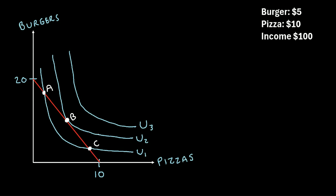Well, at points A, B, and C we're spending the same amount, because notice that all of these points are on our budget line. So we're spending $100 at each of these points. But we can see that the point that allows us to maximize our utility is point B, because this point is touching the indifference curve U2. Notice that point A and point C are both touching U1, and every point on U2 gives us more satisfaction than every point on U1. So point B is the point that maximizes our utility given our budget constraint.